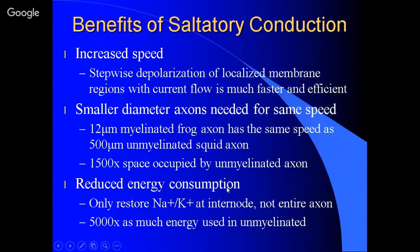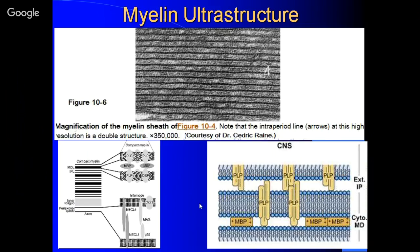If you look at energy consumption, the whole development of the brain requires the evolution of methods to gain greater energy efficiency and reduce heat generated. You use 5,000 times more energy in an unmyelinated axon. So this is all about speed and energy efficiency.